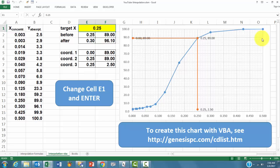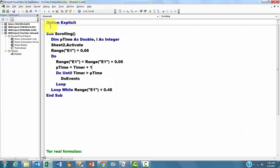If you want to know how to create this chart with VBA, I am not going to explain that here. You go to my book. You can find that at genesispc.com forward slash cdlist.htm. I want to show you one more thing.